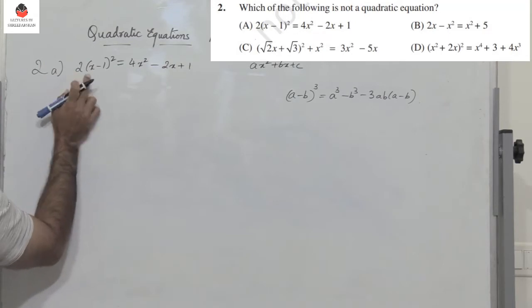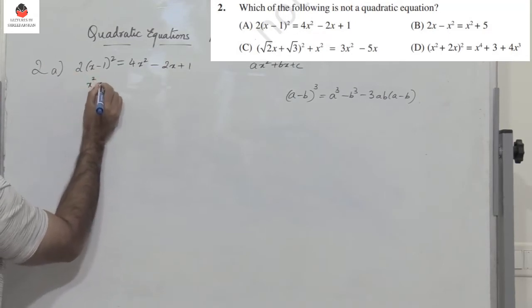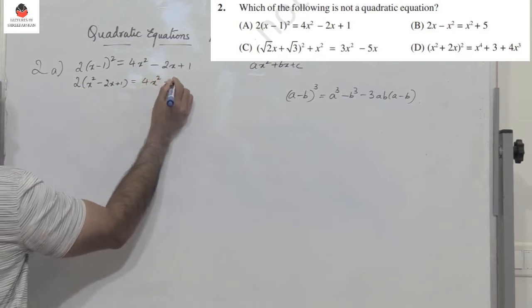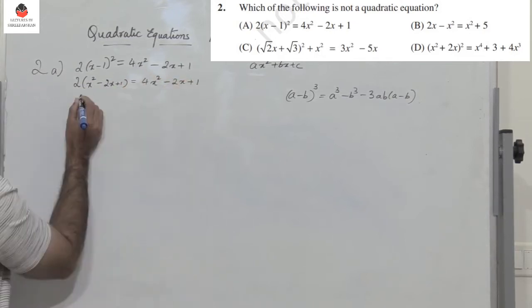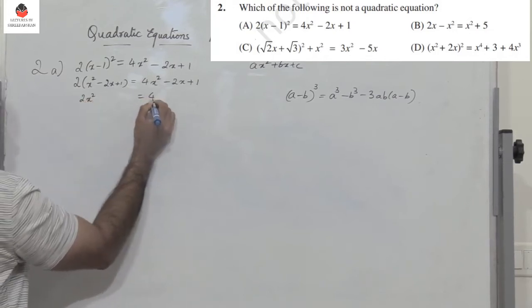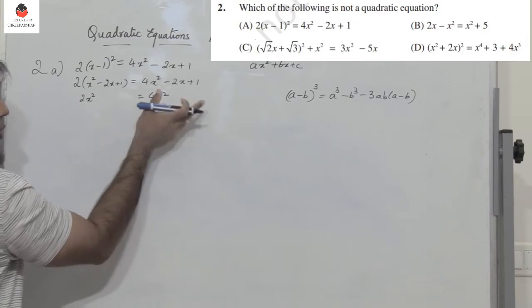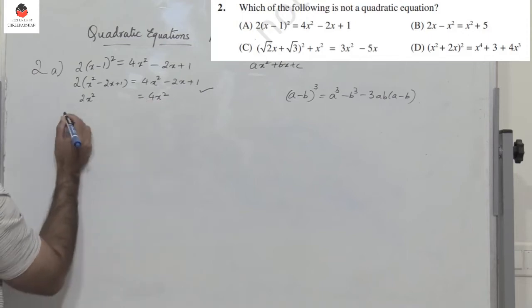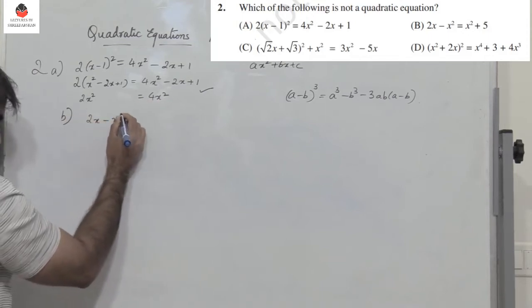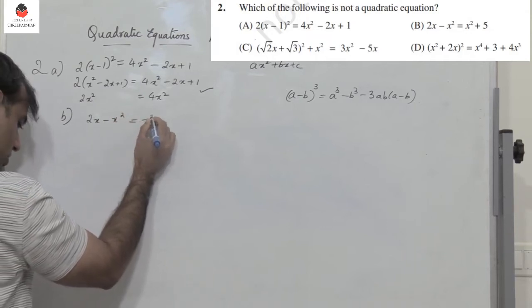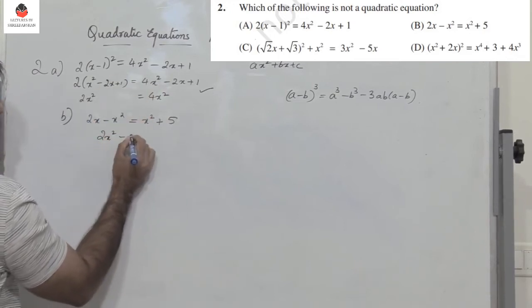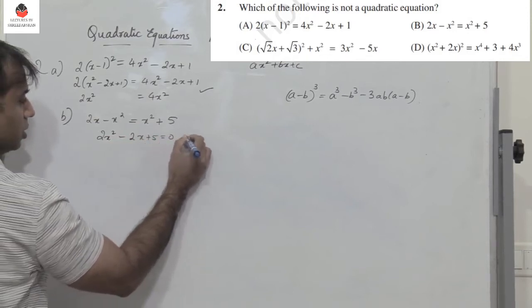So here you get 2x squared on the left and 4x squared on the right. Bringing 2x squared to the other side gives 2x squared — this is a quadratic equation. Observe that in question 2, we need to identify which is NOT a quadratic equation. Options A, B, and C are all quadratic equations — for example, option C gives 2x squared minus 2x plus 5 equals 0.